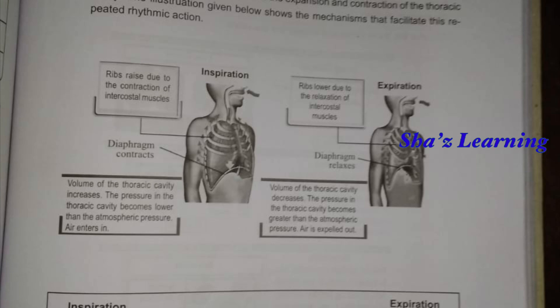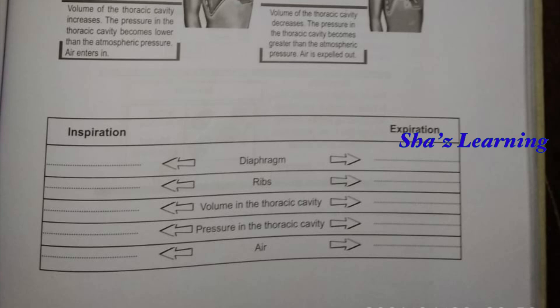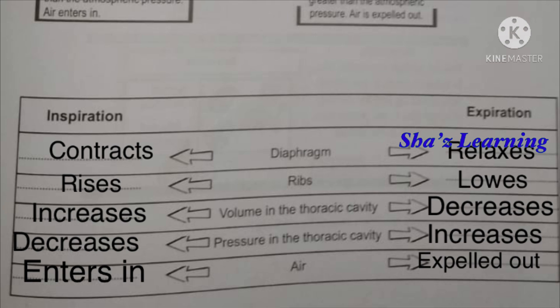During inspiration and expiration, our ribs, diaphragm, volume of the thoracic cavity, and pressure all change. During inspiration, the diaphragm contracts and the ribs move up. The volume in the thoracic cavity increases during inspiration and decreases during expiration. The pressure in the thoracic cavity decreases during inspiration and increases during expiration. Air flows in during inspiration and is expelled out during expiration.